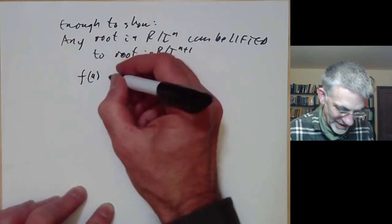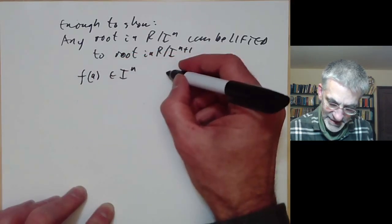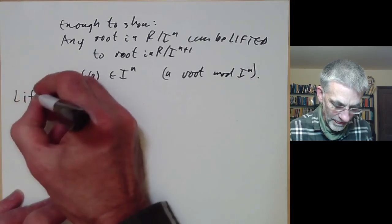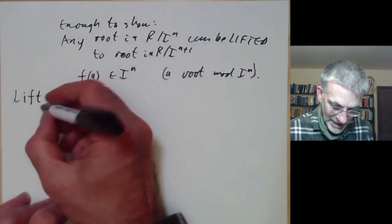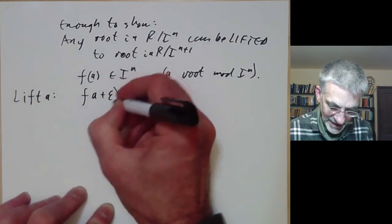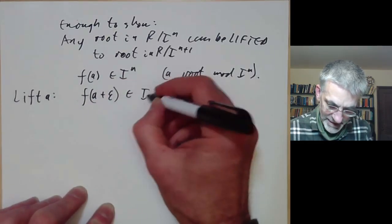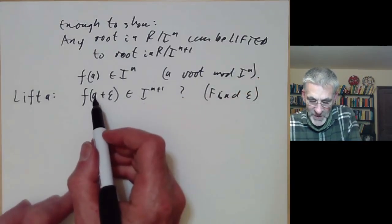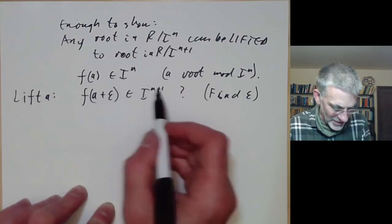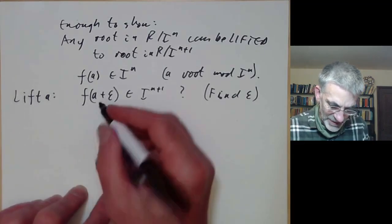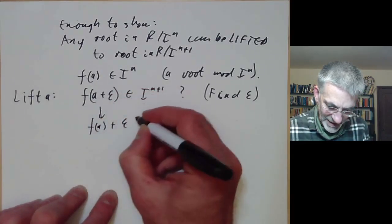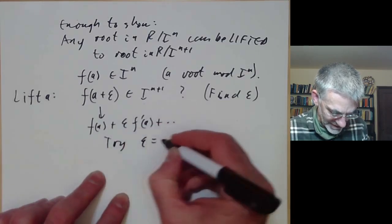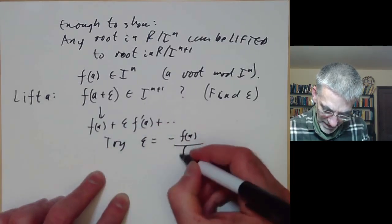Suppose we have a root modulo i to the n, so f(a) is in i to the n. We want to find a root f(a + ε) that is in i to the n plus 1. So we want to find some ε with this property — we're starting with a root modulo i to the n and perturbing it a little to make it a root modulo i to the n plus 1. Expanding: f(a + ε) ≈ f(a) + ε·f'(a), which suggests we try ε = −f(a)/f'(a).